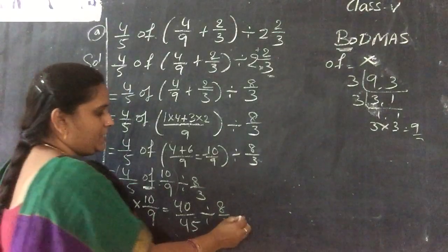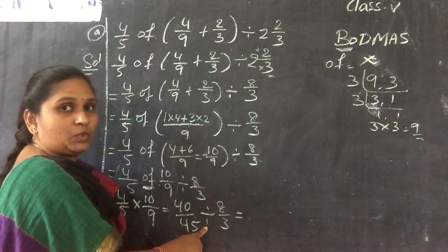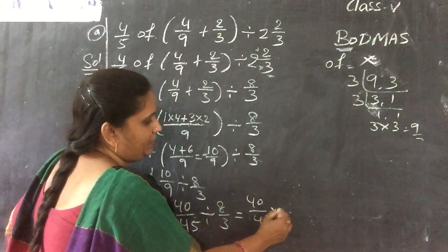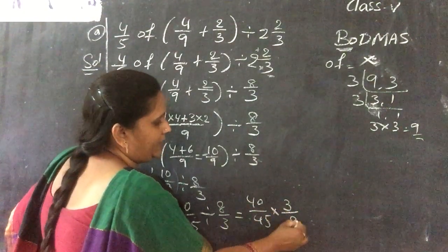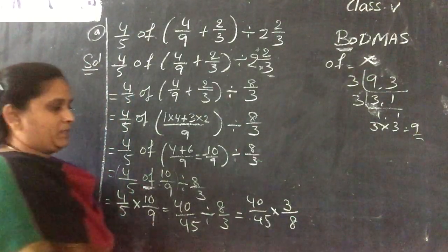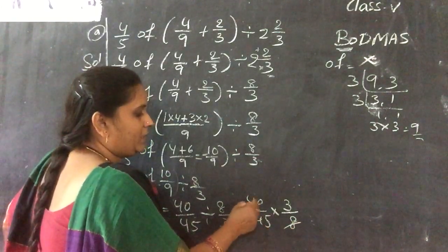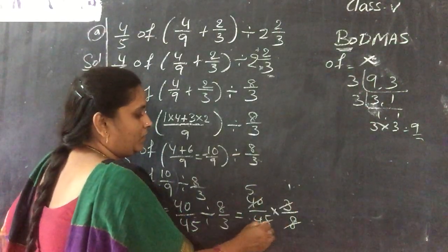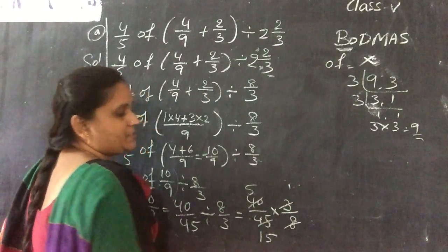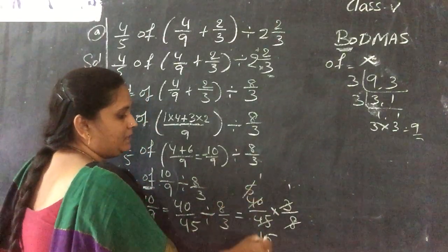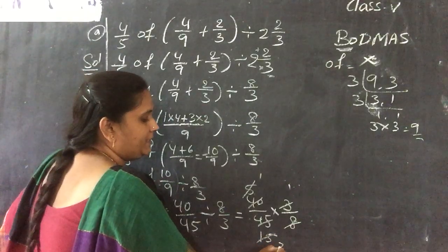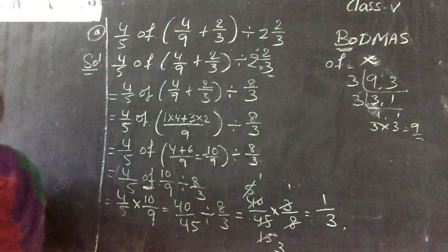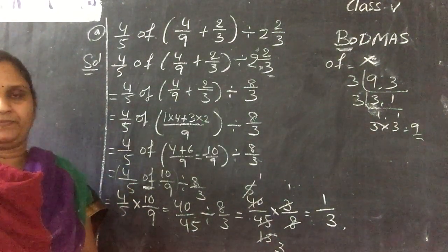Convert the division into reciprocal: 40/45 × 3/8. Simplify: 40÷8=5, 45÷15=3, 15÷5=3, giving 1 by 3 as the answer. This comes under simplification.